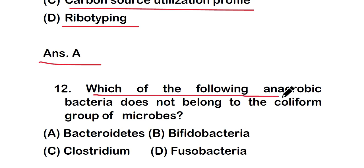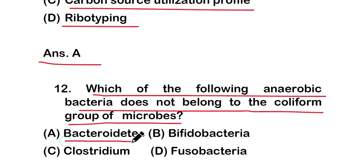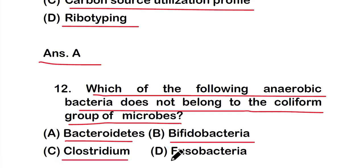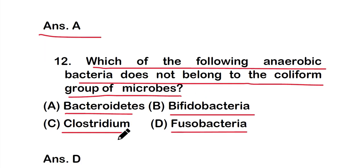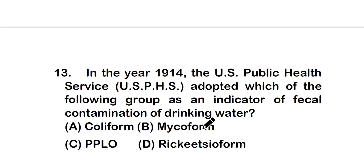Question twelve: which of the following anaerobic bacteria does NOT belong to the coliform group of microbes? Options: Bacteroides, Bifidobacteria, Clostridium, or Fusobacteria. The right answer is option D — Fusobacteria does not belong to the coliform group.